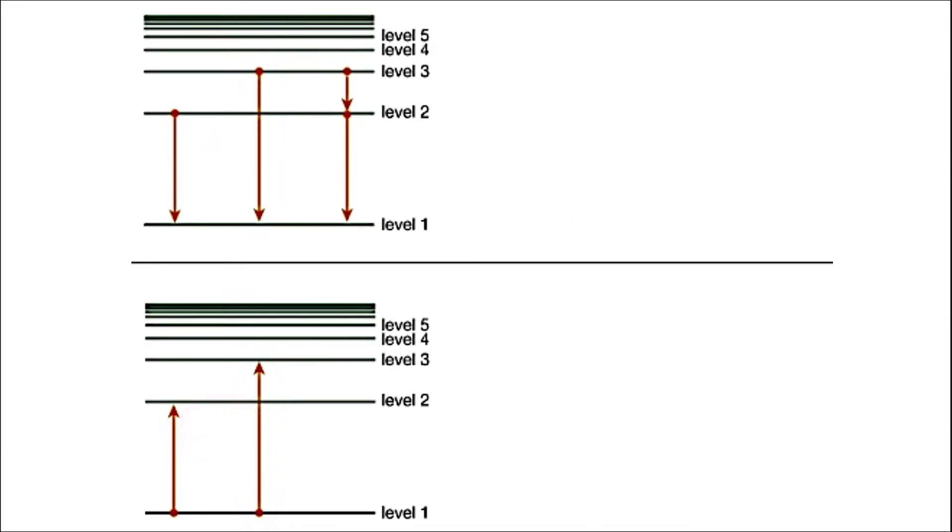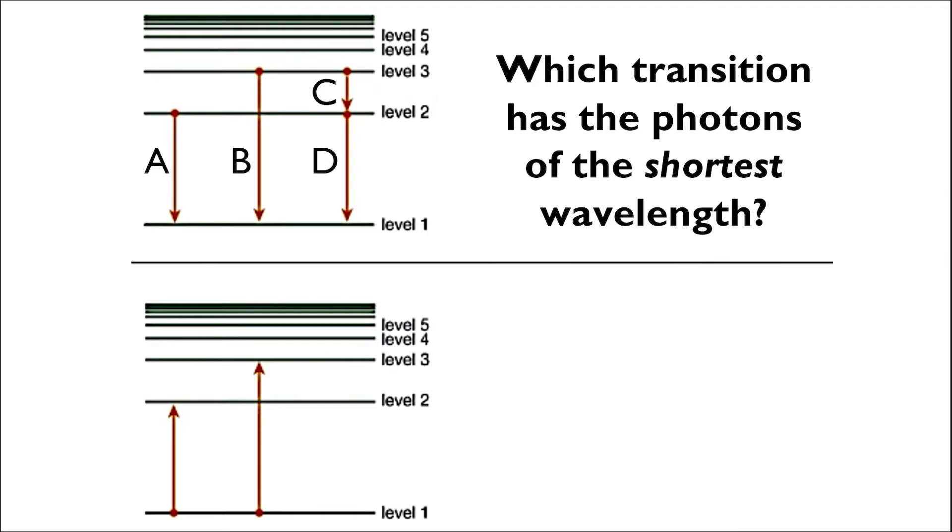Now, which of these transitions, labeled A through D, has the photons of the shortest possible wavelength? Remember, the bigger the jump, the more energy is associated with that jump, and the more energy there is, the shorter the wavelength of that photon. So our answer here is B.